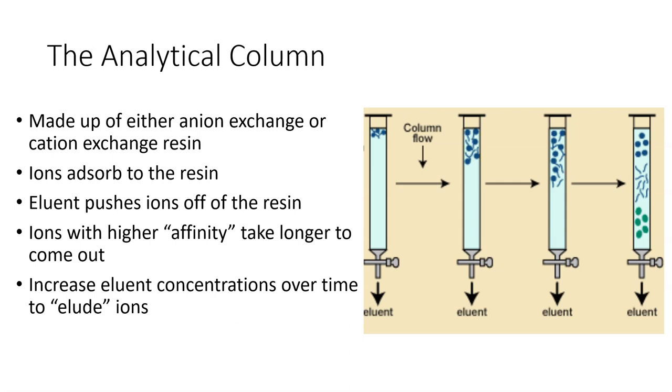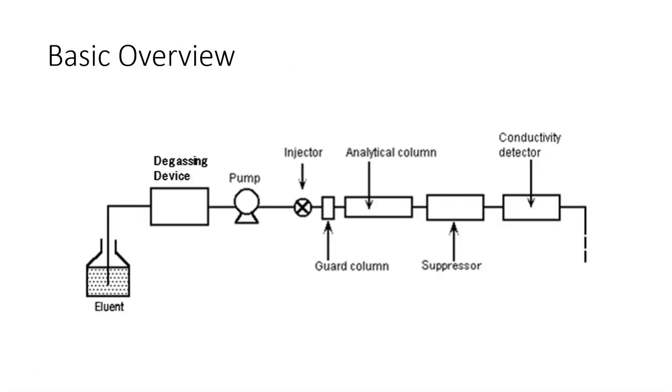Over time we're generally going to increase eluent concentrations to elude ions, and this term elude basically means to push them off of the column. So now your sample is passed through the analytical column and your ions are starting to elude. They need to make their way to the conductivity detector to be measured.